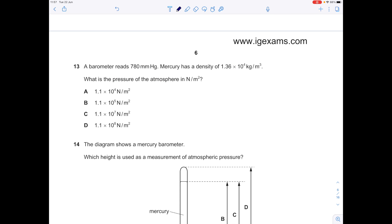A barometer reads 780 millimeters of mercury. Mercury has a density of 1.36 times 10 to the 4. What is the pressure of the atmosphere in newtons per meter squared? Remember a barometer measures pressure and it does that by measuring the distance moved by that mercury, which we know is 780 millimeters. We've got the density here. The equation you need is pressure equals height times density times gravity. So the height we've been told is 780 millimeters. Be careful, that needs to be in meters. So you need to divide that number by a thousand. Our density is 1.36 times 10 to the 4 and remember gravity on Earth is 10, and you'll get an answer which is this one here. Put that in standard form, so it's 1.1 times 10 to the 1, 2, 3, 4, 5. So B is the answer.